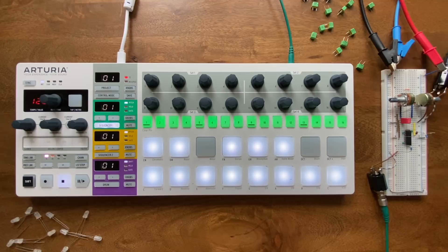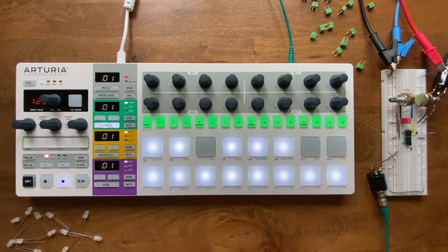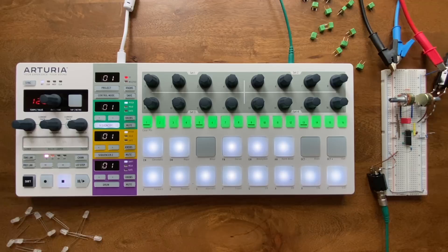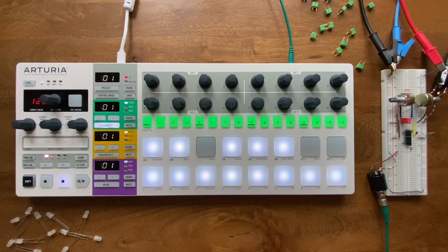So when I push one of these pads, our envelope gets triggered and runs through its attack phase. If I hold it long enough, we reach the envelope's peak and will stay there until I let go. Then the release phase starts and eventually we return to the initial state. Cool, so now we've got a proper active attack release envelope.